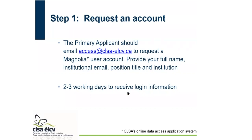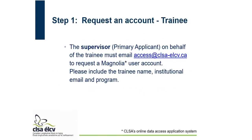It usually takes two to three days to receive the login information. If it's a training application, the supervisor, who is the primary applicant, also needs to email the access email on behalf of the trainee to request a Magnolia user account for the trainee, providing their name, institutional email, and program.